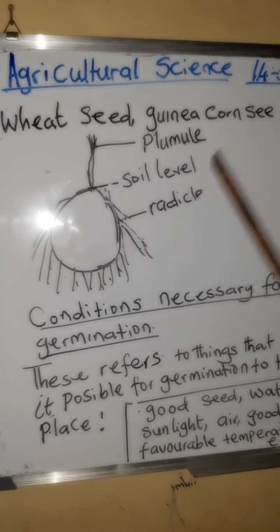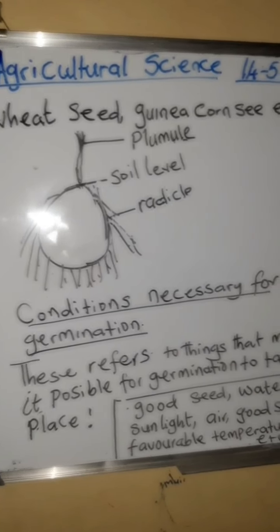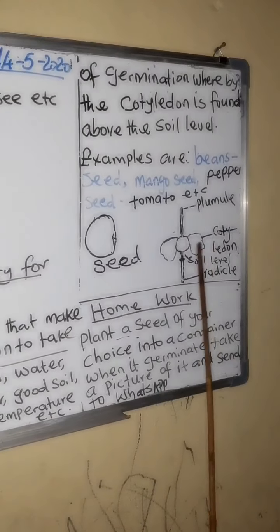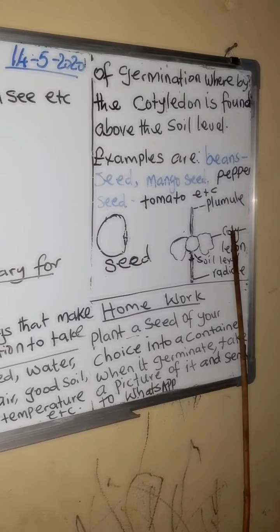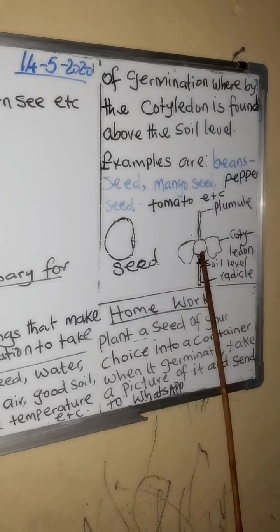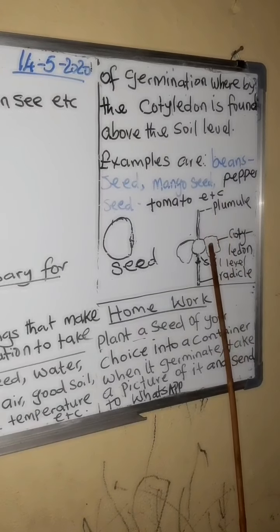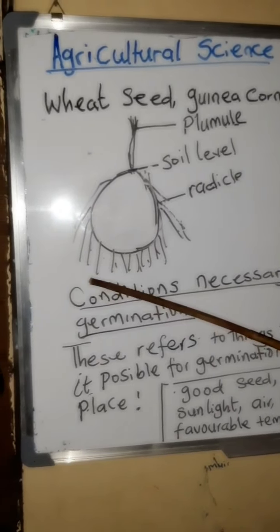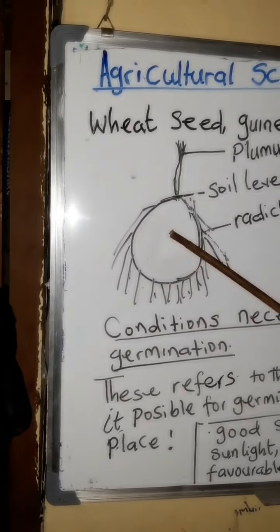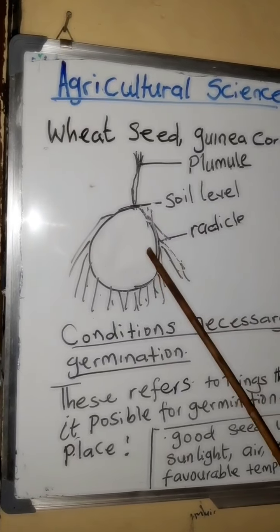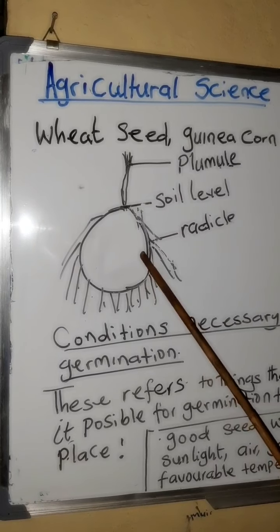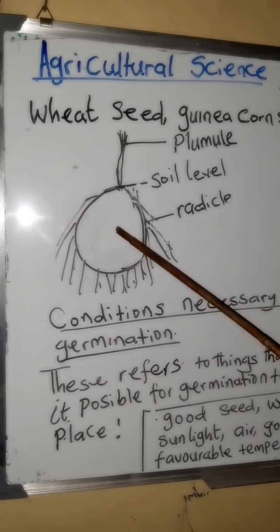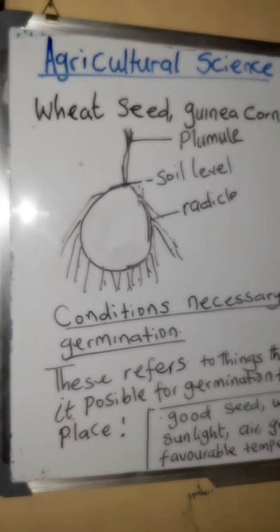Comparing the two diagrams: in epigeal germination, the cotyledon is above the soil level — it shoots up. In hypogeal germination, the cotyledon is beneath the soil — inside the soil — you cannot see it. This is how each type of germination works.